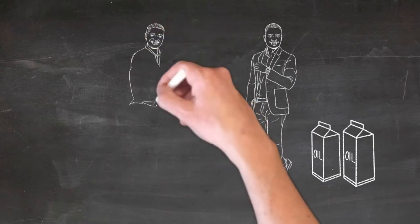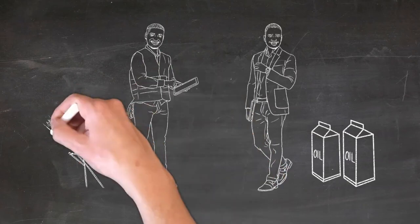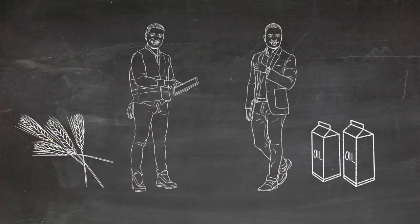Then he asked the second, 'How much do you owe?' He said, 'A thousand bushels of wheat.' He told him, 'Take your bill, and make it 800.'